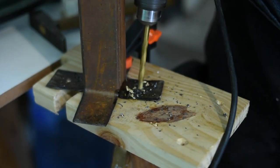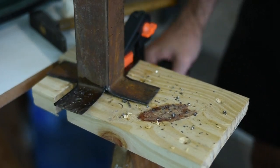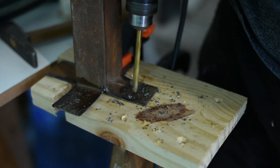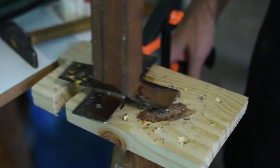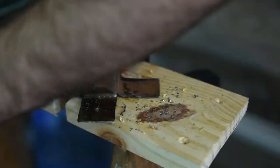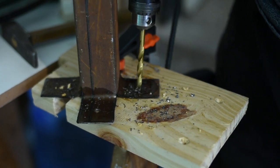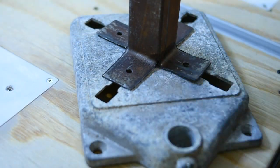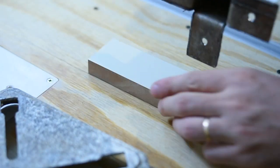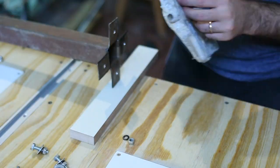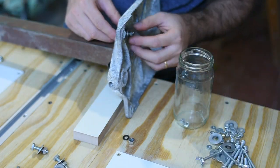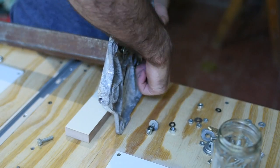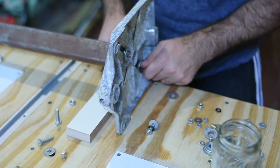Como estaban viendo, lo que utilicé fue un caño estructural de 4 cm por 4 cm de lado. Lo que hice fue cortarle y doblarle unas patas hacia adentro, que es lo que me va a permitir sujetarlo a esa base que tenía guardada. Lo que hice fue hacer los agujeros y unirlos con tornillos.